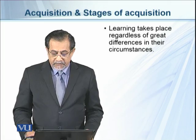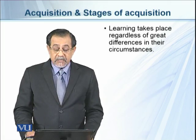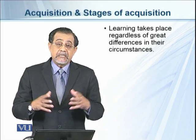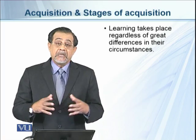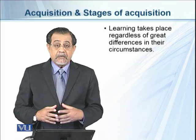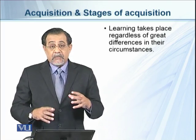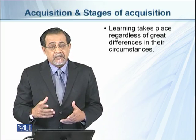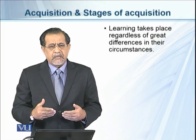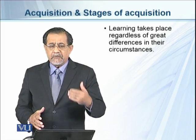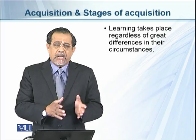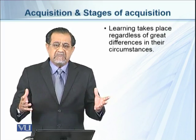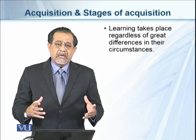Learning takes place regardless of great differences in circumstances. People living in different social strata, different countries, and different eras all acquire language at roughly the same time, with little variation. There is no difference between social classes — a child at the upper class does not learn better than a child at the lower class; they learn language equally well.